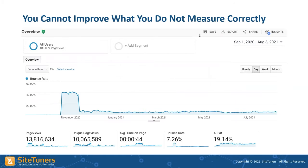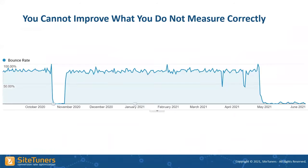A lot of times we see bounce rates that make no sense. For example, one site had a bounce rate of 40% that dropped to 7% — I promise you that website does not have a 7% bounce rate. Something changed in their November/December timeframe and messed up their analytics. Another example: the bounce rate dropped to zero, and I'm pretty sure in May it didn't drop to zero either.